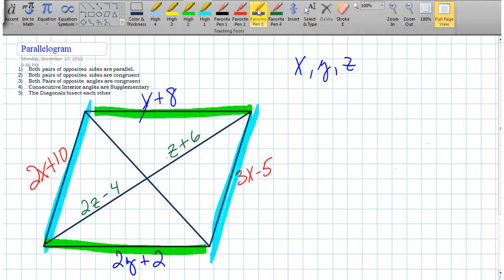And so what do we have? I'm going to write down 2x plus 10 equals 3x minus 5. And so if you're clever about finding x in here, it looks like x turns out to be 15.